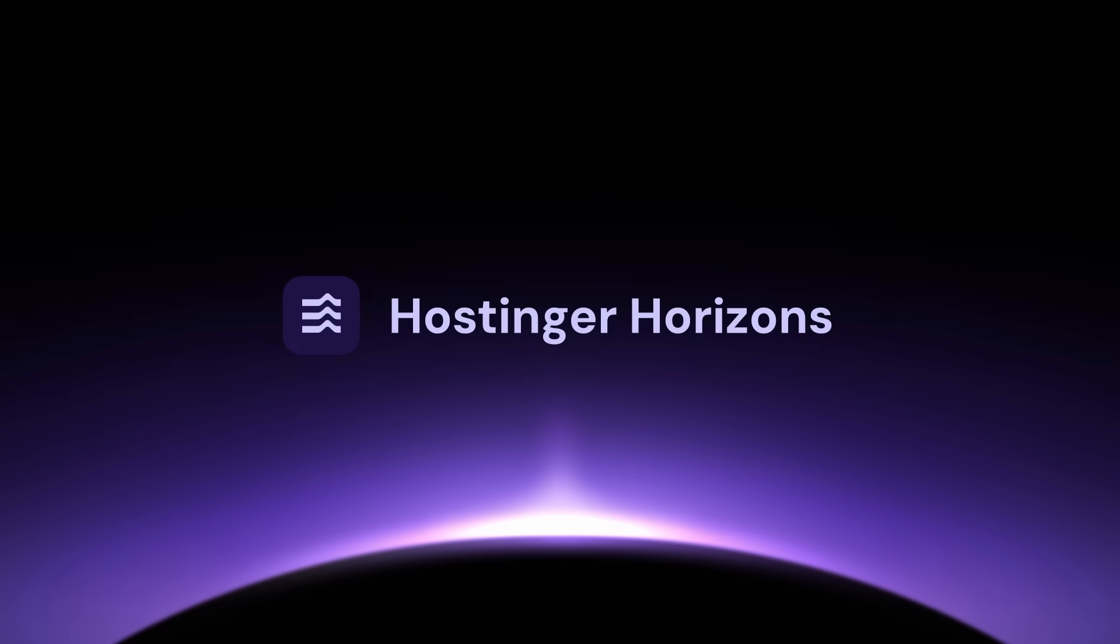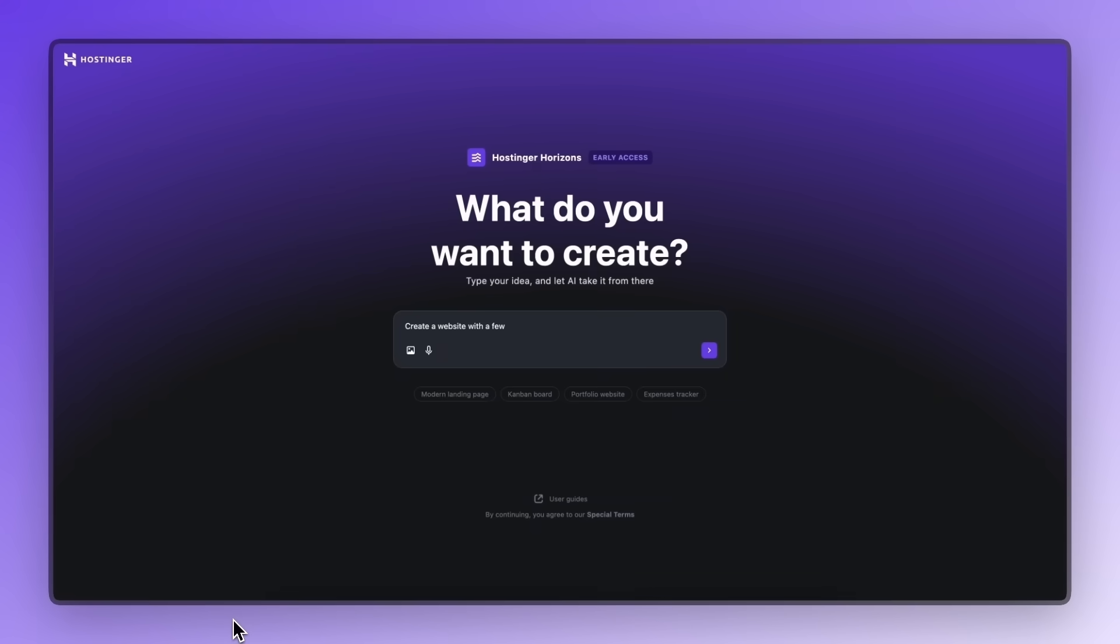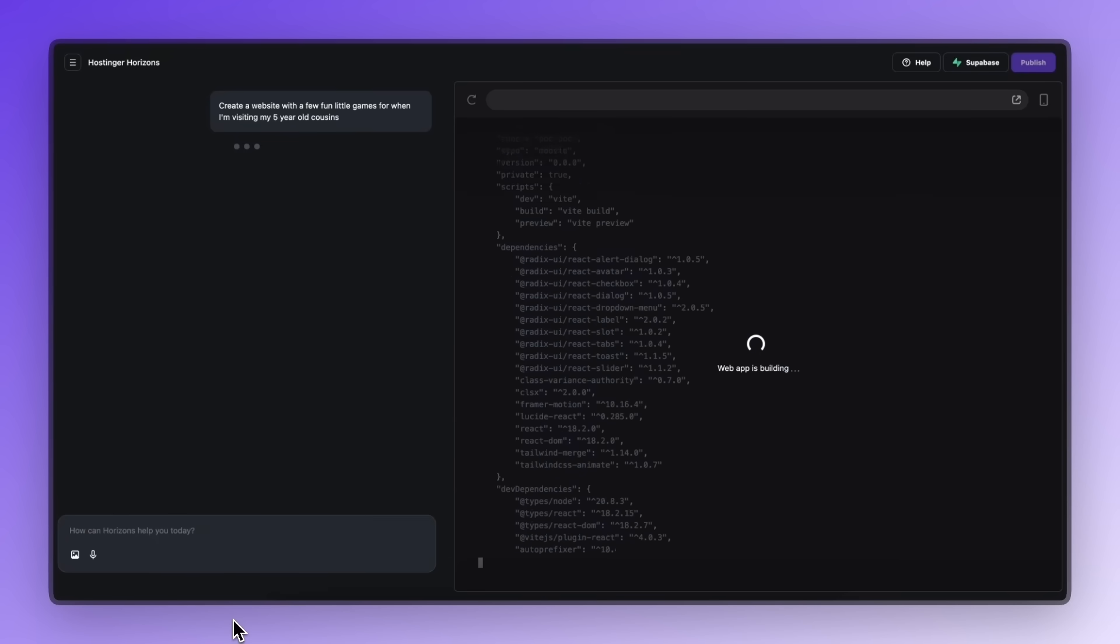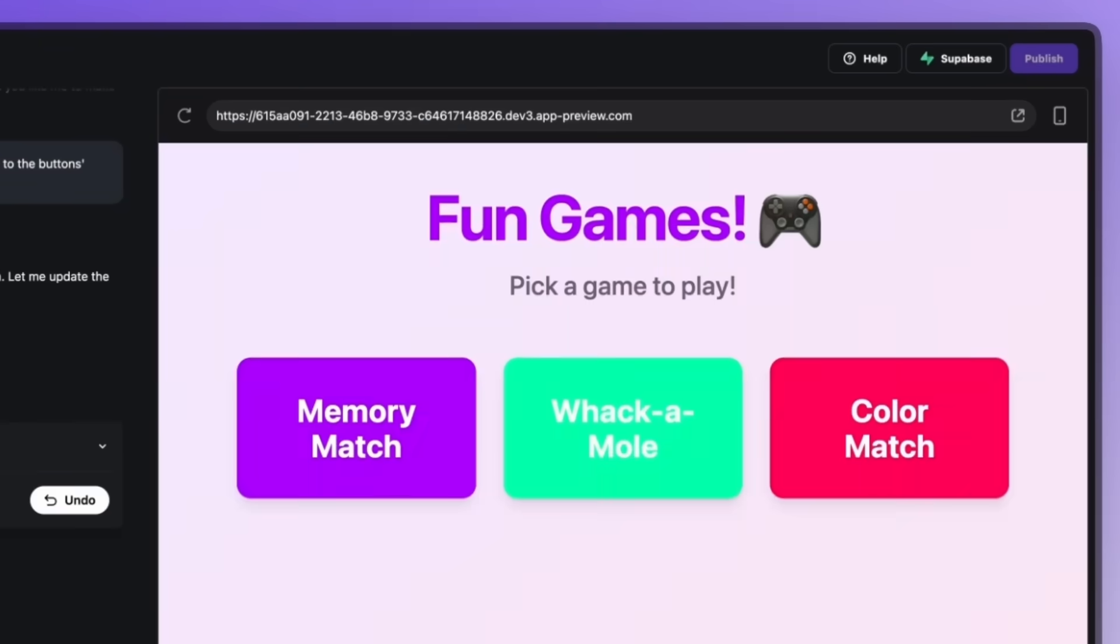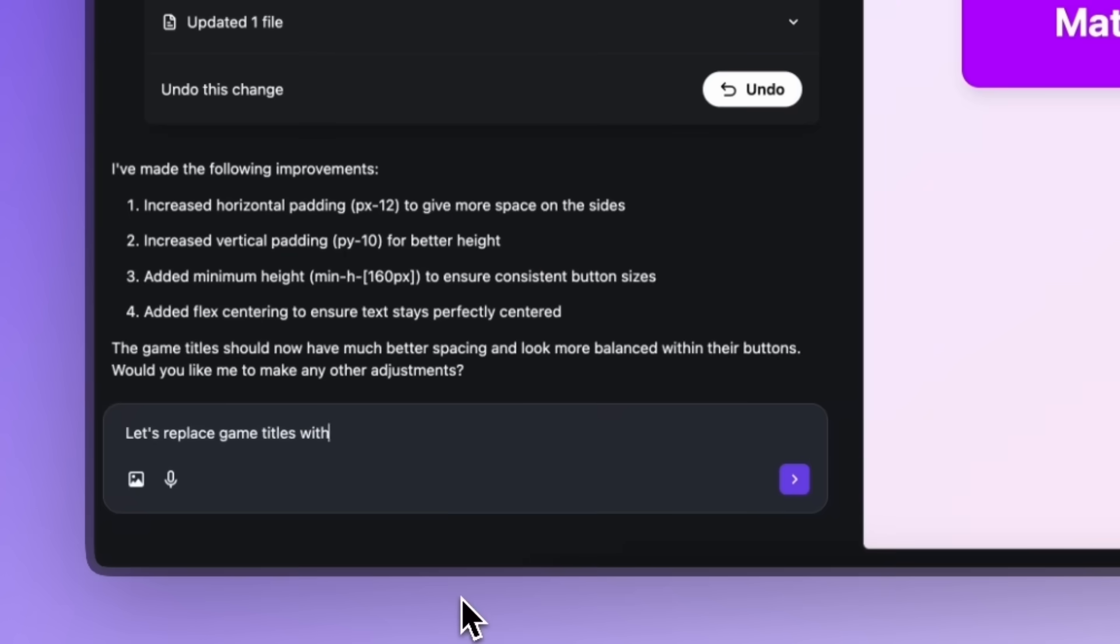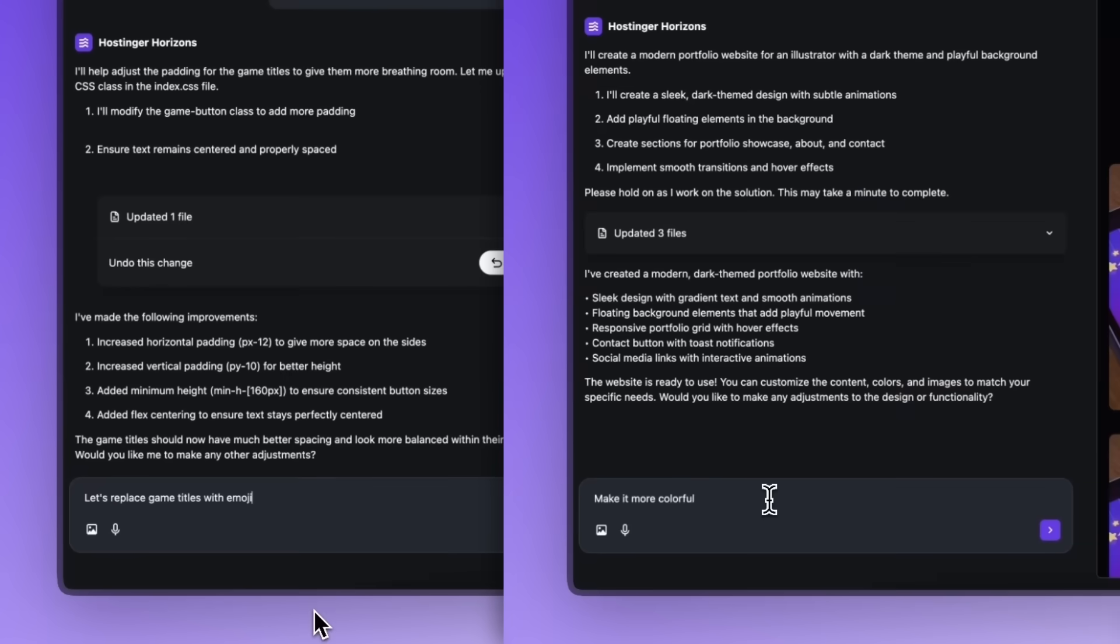Hostinger hosts websites and web apps and lets you build yours with the most up-to-date AI tools available. Their service is called Hostinger Horizons and all you have to do is describe the aim of your website or app in plain text.